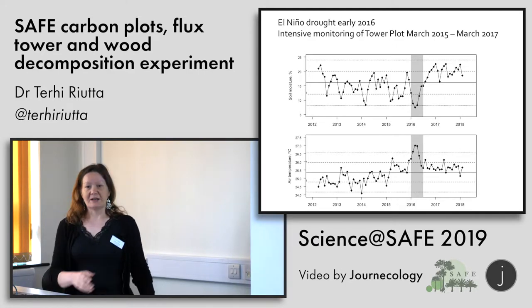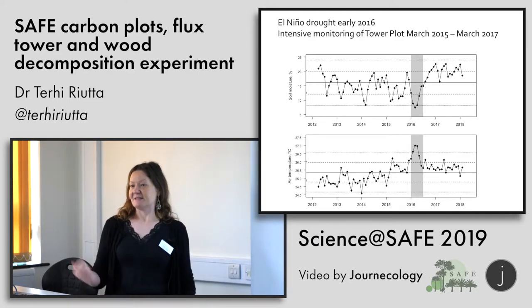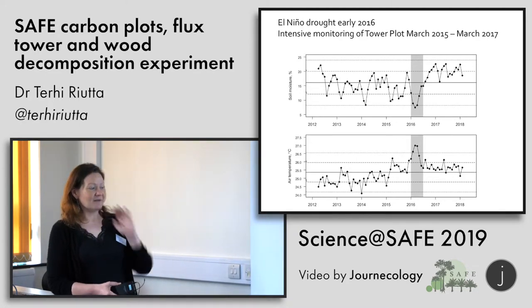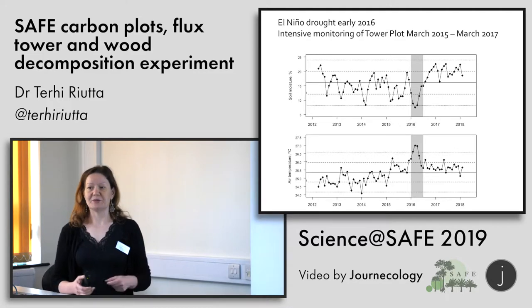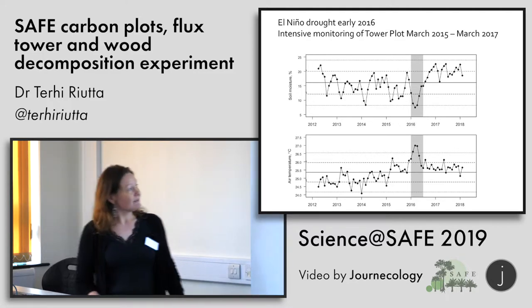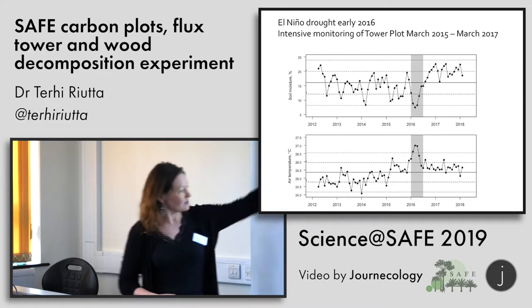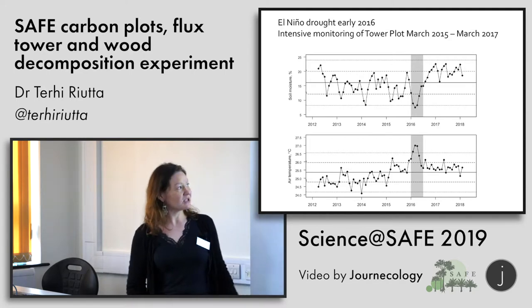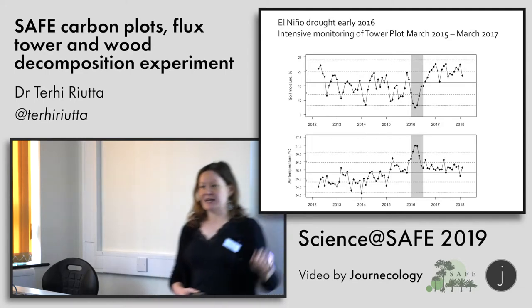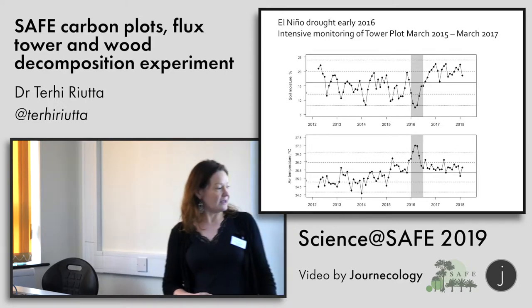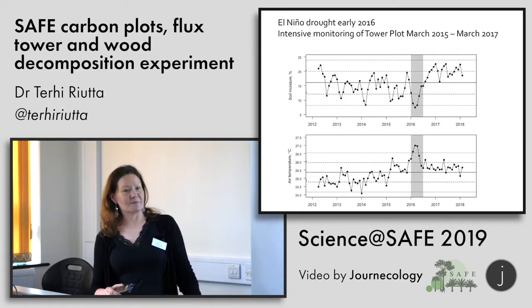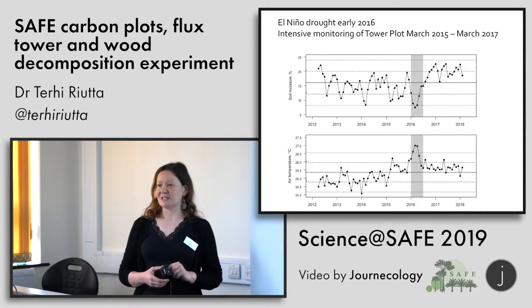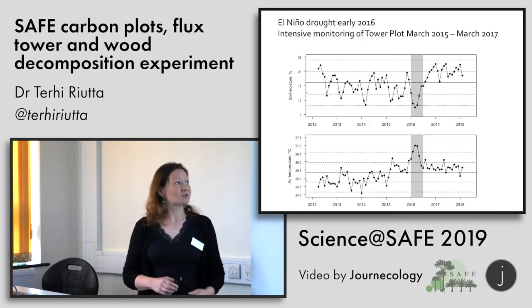That was spatial data with temporal patterns averaged. But in 2016 we had the strong El Niño drought. Looking at meteorological data from the flux tower — soil moisture and air temperature — we can see it has been dry on other occasions, but what we saw in early 2016 was a very unusual combination of very low soil moisture combined with very high temperature. The trees were under considerable drought stress at that time.